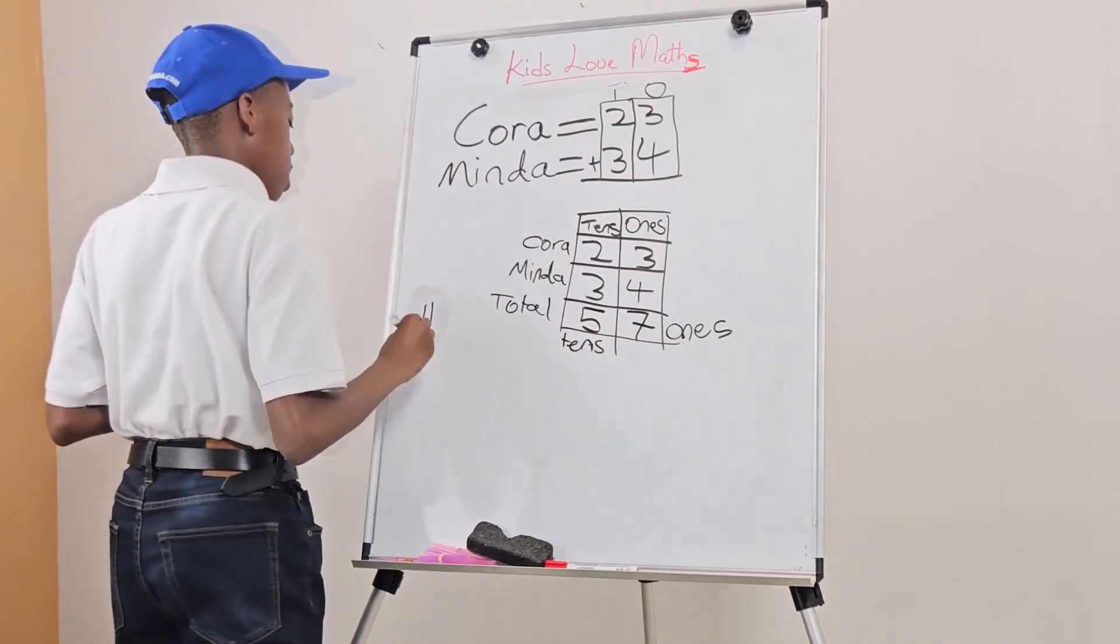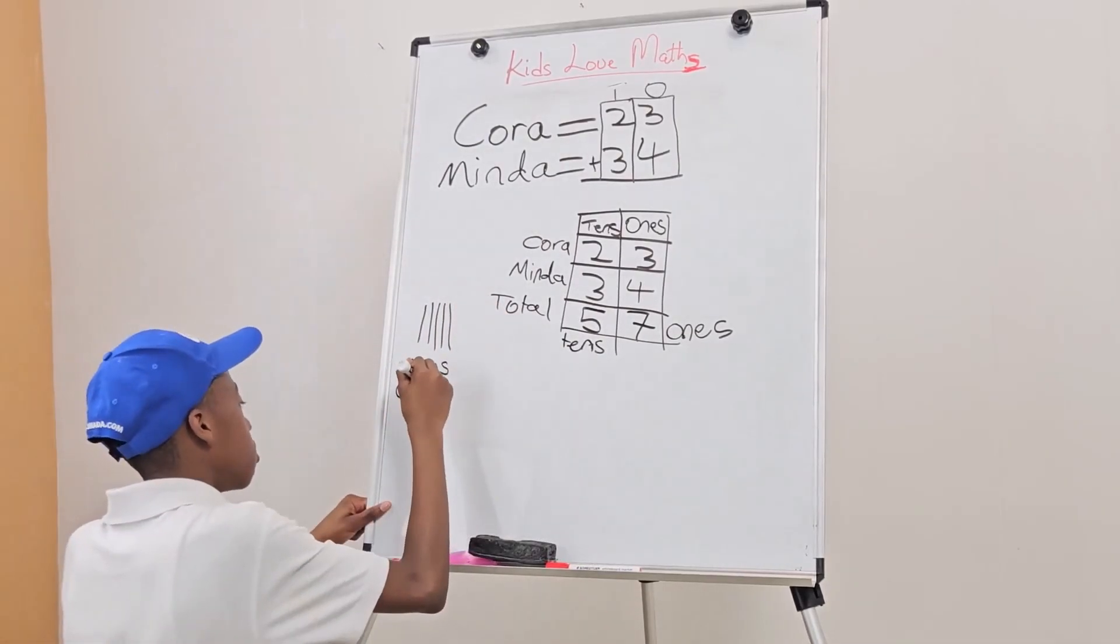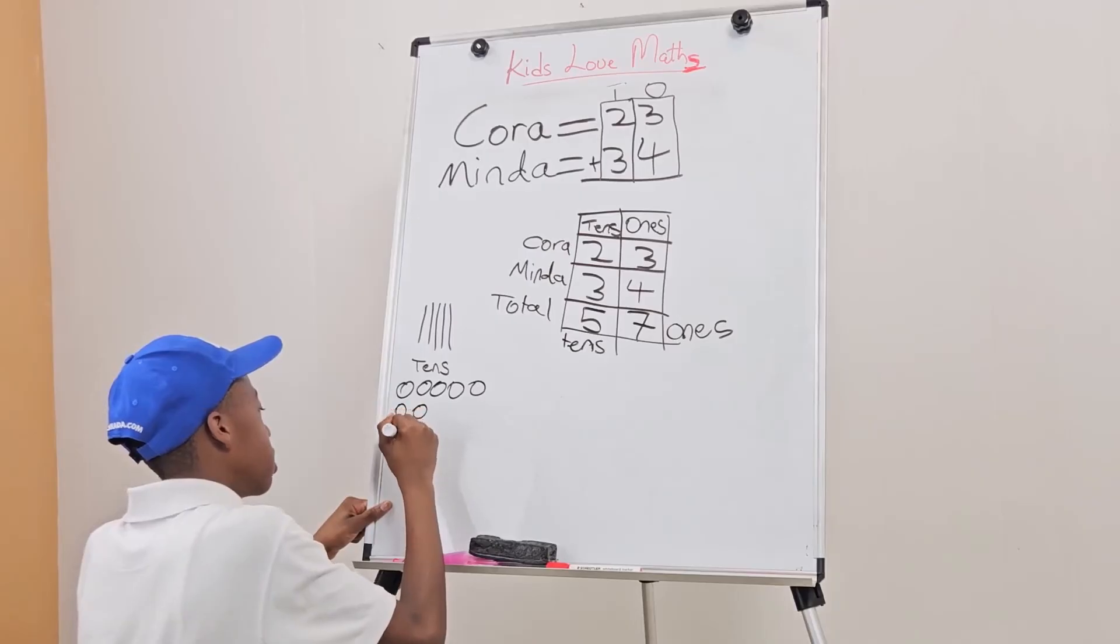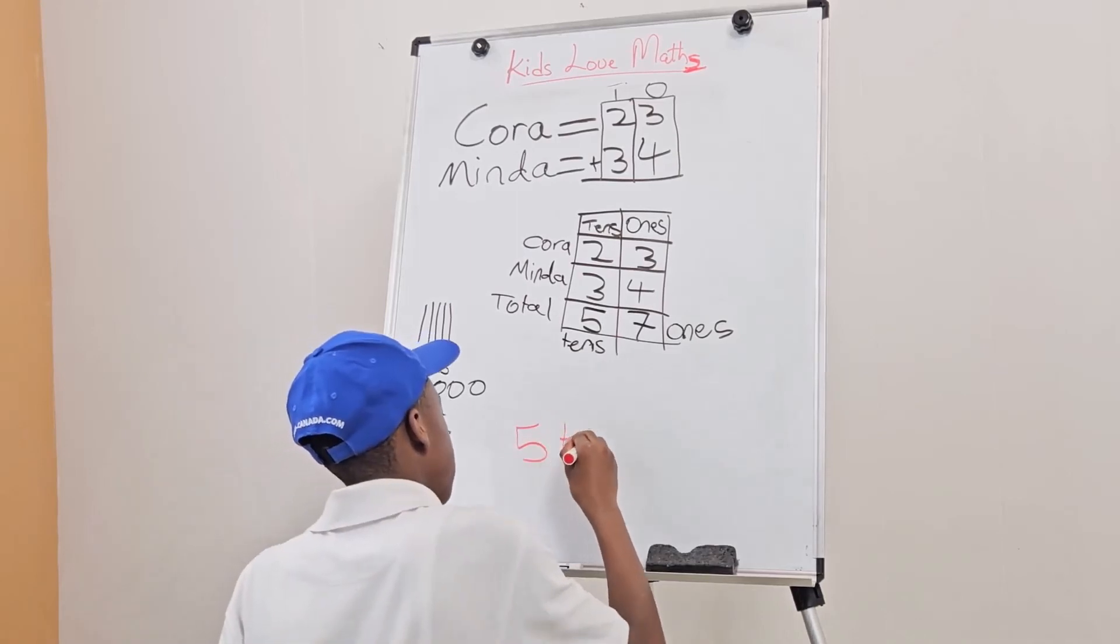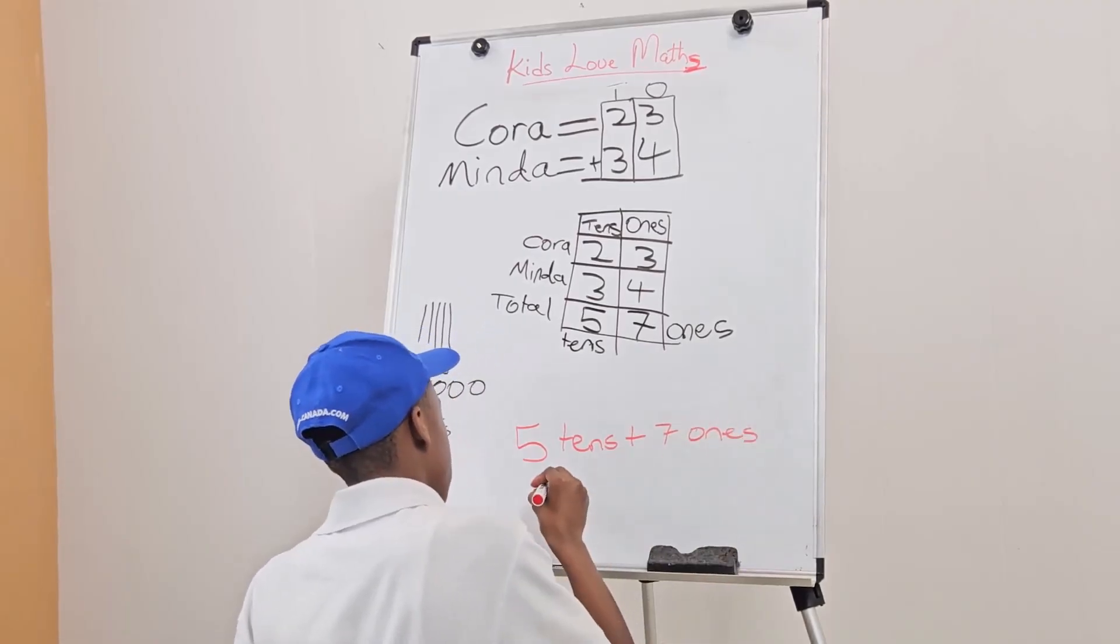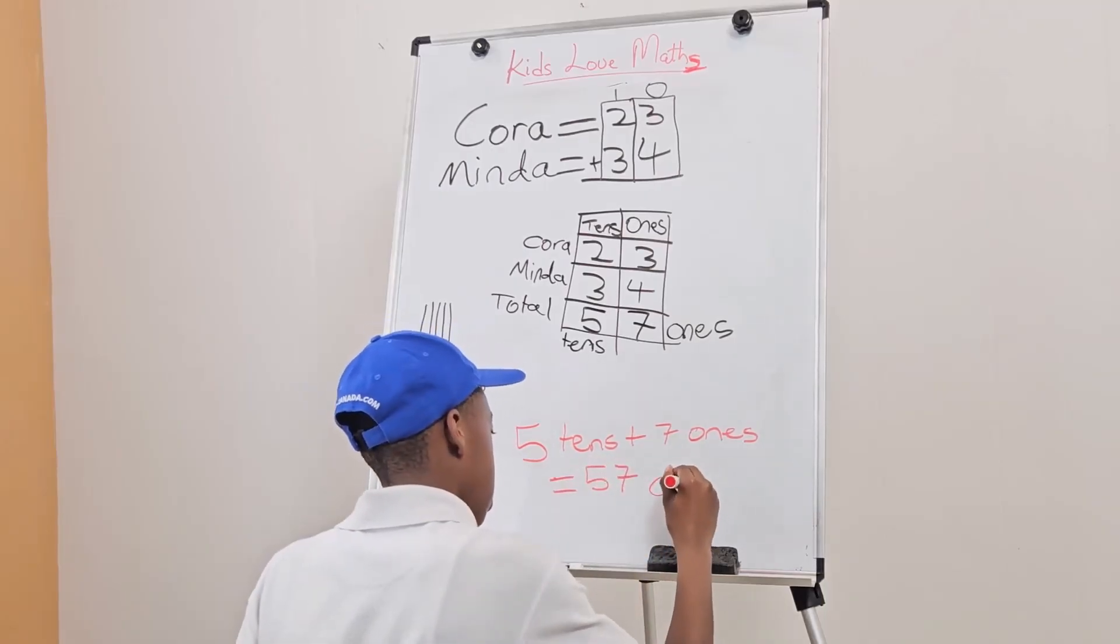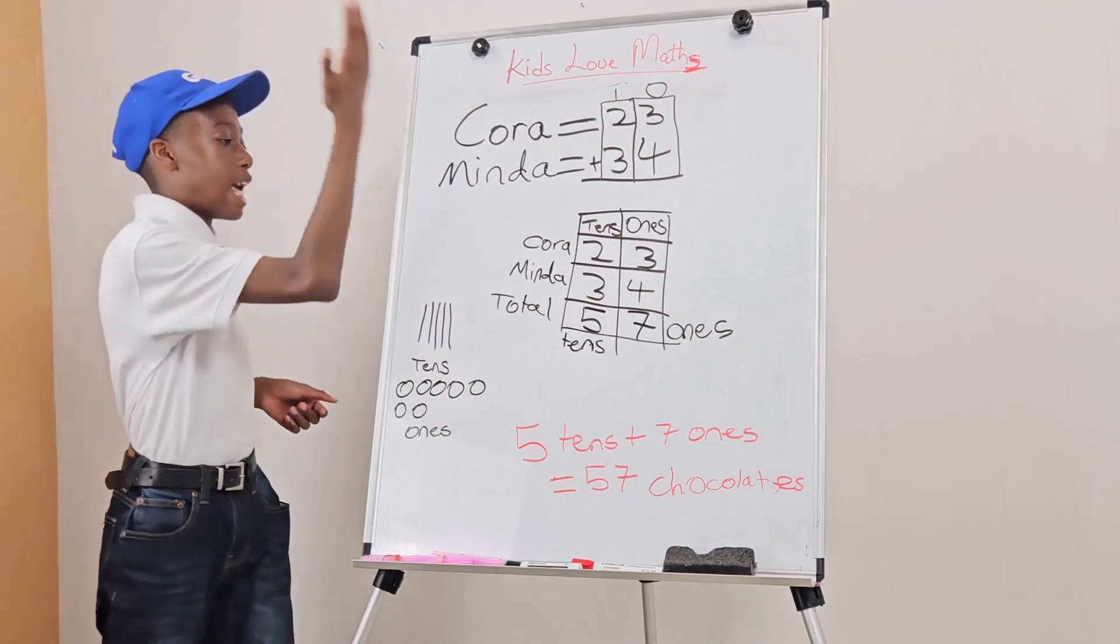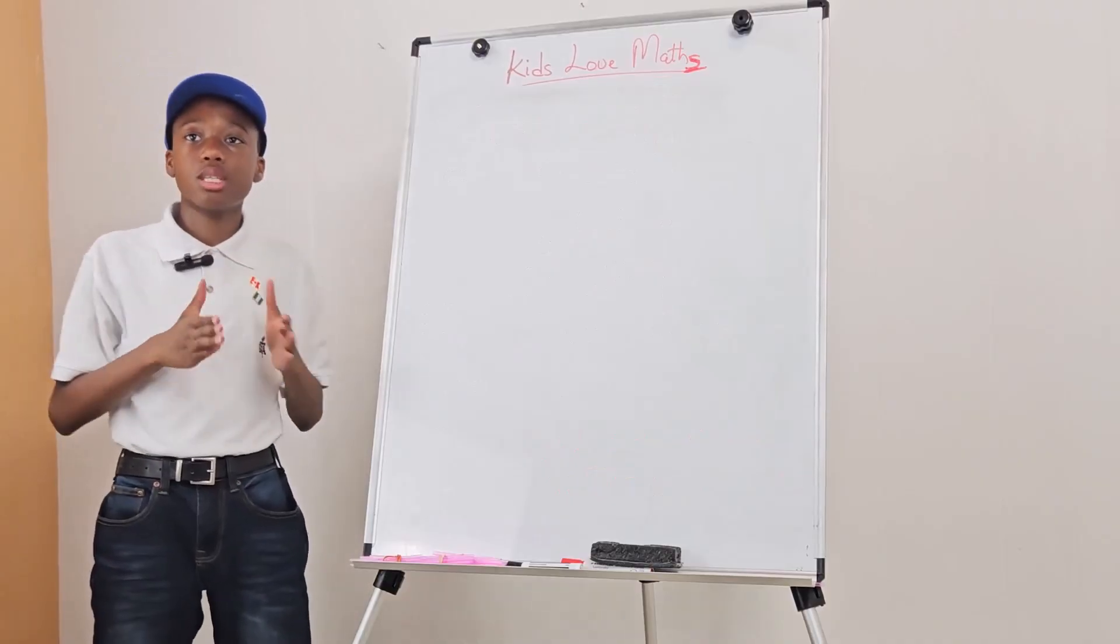And then, 2 plus 3 equals 5 tens. So, we get 1, 2, 3, 4, 5 tens. And 1, 2, 3, 4, 5, 6, 7 ones. So, we would have 5 tens, 7 ones would equal to 57 chocolates. Okay, I hope you understand this is how we do addition. You see how we move from two-digit numbers to three-digit numbers.